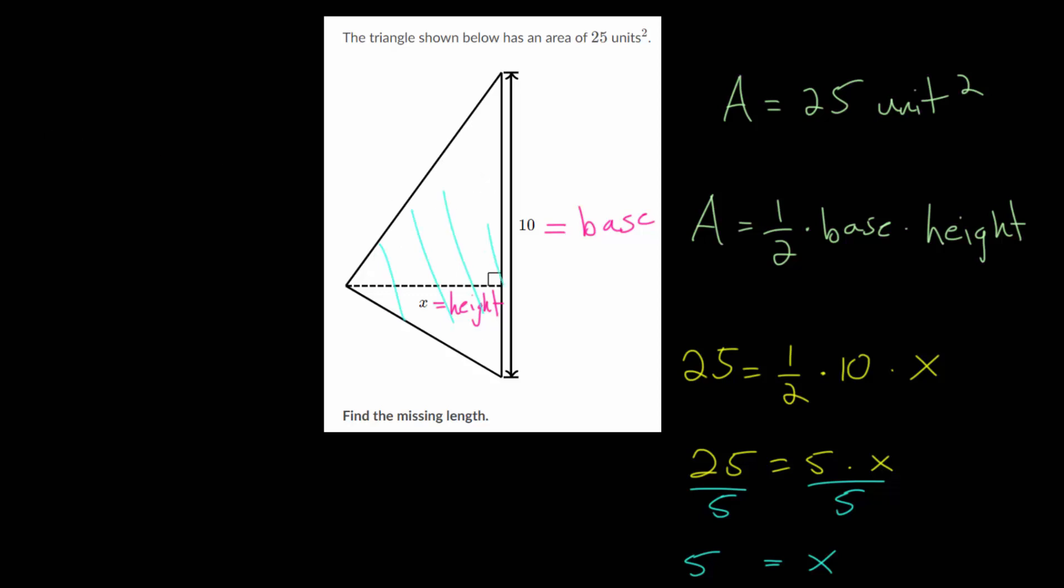This would be 5 units, since we're just talking about a length rather than how much space something's taking up. If it's taking up space, we have square units. But if it's just a length, it's just units, or units to the first power. So our height is 5 units.